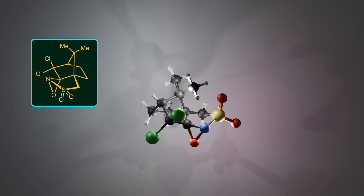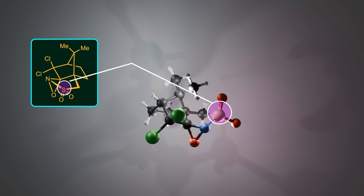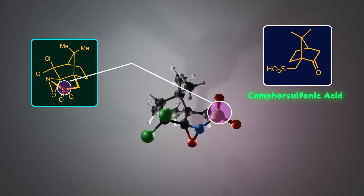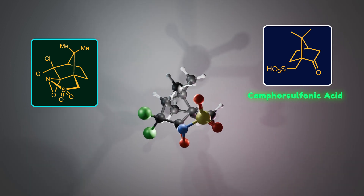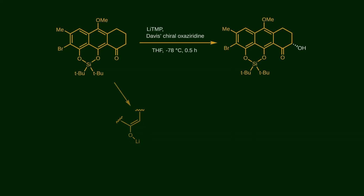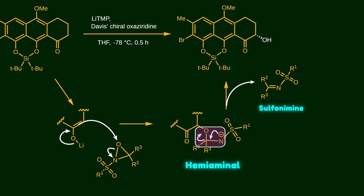Nicolaou's group used Davies' chiral oxazoridine for this purpose. It has a unique structure — here you can see the oxazoridine core, a three-membered ring containing oxygen, nitrogen, and carbon. The nitrogen atom is attached to a sulfur atom, which comes from camphorsulfonic acid, a chiral auxiliary used to induce chirality. Surprisingly, the oxygen atom in the oxazoridine ring acts as an electrophile. After treatment with base, the resulting enolate attacks the electrophilic oxygen atom, opening the ring and forming an unstable hemiaminol, which then collapses to give the sulfonimine. Due to the chiral structure of Davies' chiral oxazoridine, the hydroxyl group is positioned below the plane.